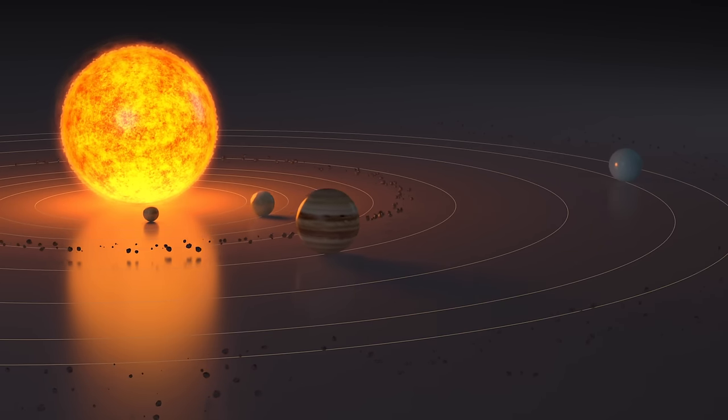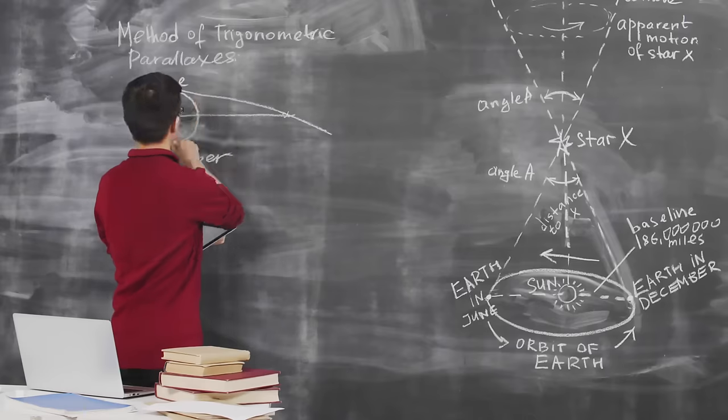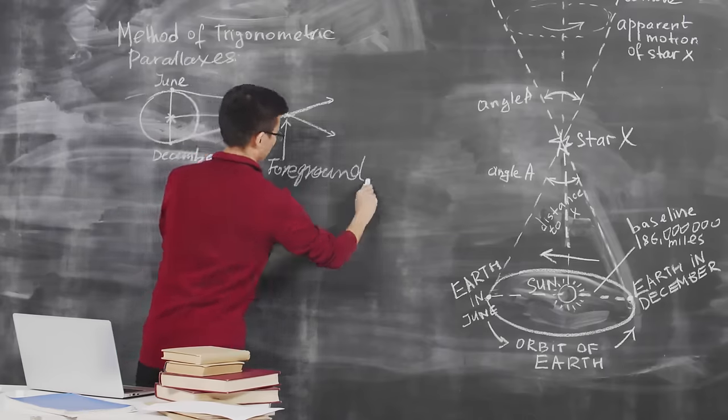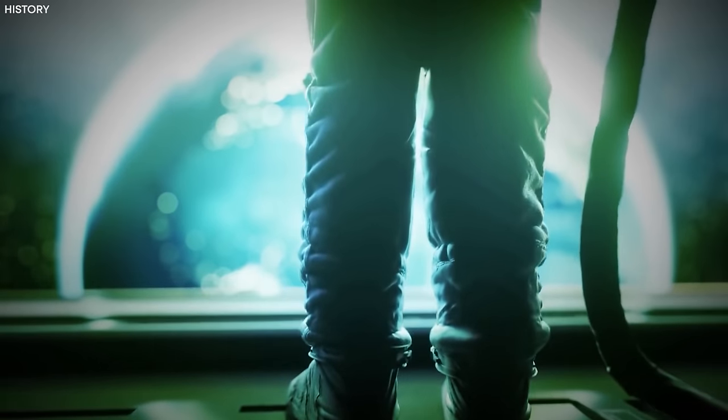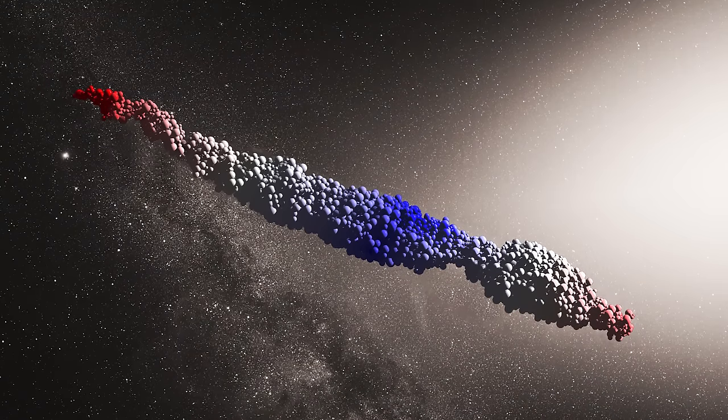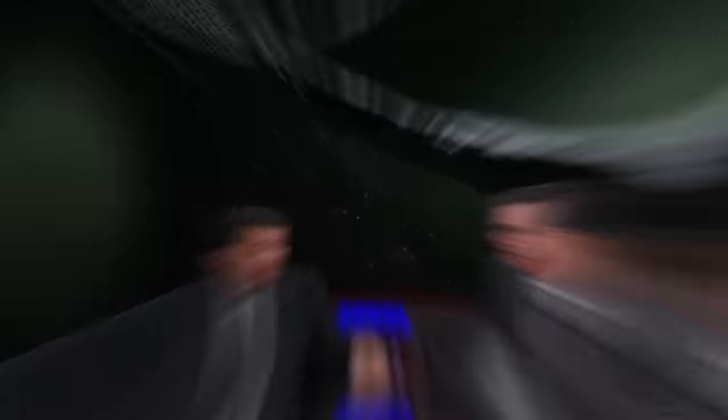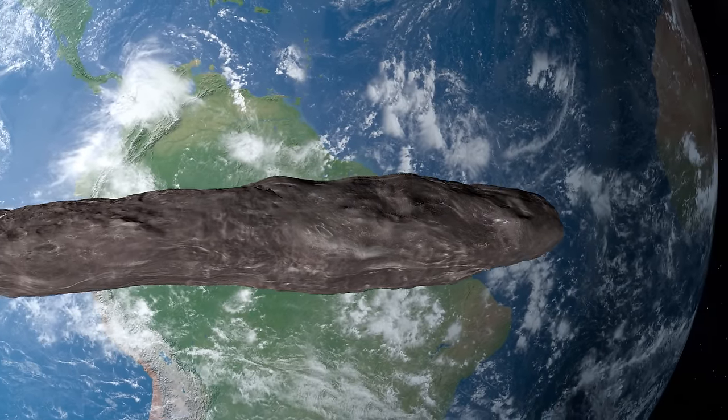One might wonder why this interstellar visitor is called Oumuamua. It certainly didn't arrive in our solar system with its name boldly inscribed upon its surface. Instead, the astronomers who discovered it named it Oumuamua, derived from Hawaiian origins, meaning visitor from afar. This name conveys the immense distance this mysterious object has traveled. Yet, the object's appearance also captivated astronomers' attention. Close observations revealed that Oumuamua had an elongated, rocky, cigar-shaped form, adorned with a reddish hue.